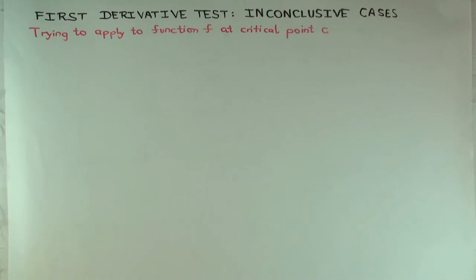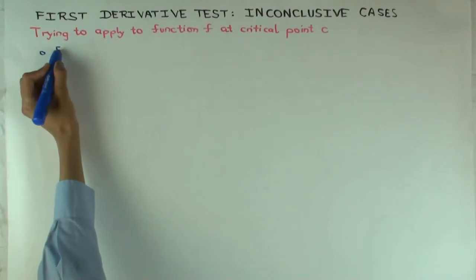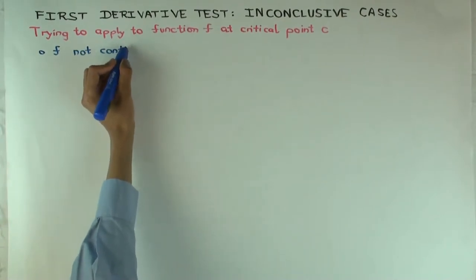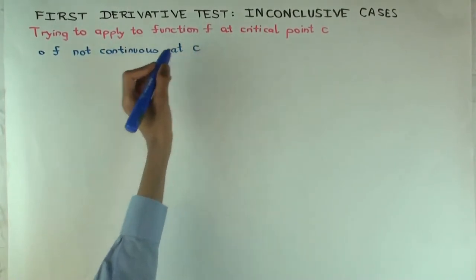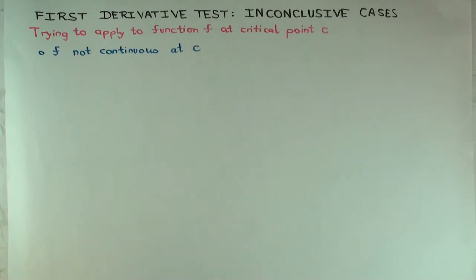The first assumption we made for the function is that it is continuous at c. So the first type of problem is that f is not continuous at c. This isn't really inconclusive — it's saying the first derivative test is inapplicable. If you did try to use the first derivative test, you may get a wrong conclusion, because you can still observe f′ positive on the left and negative on the right, but may not have a local max.